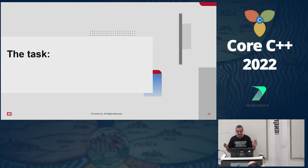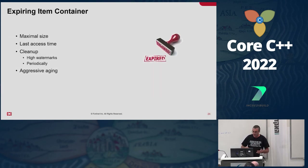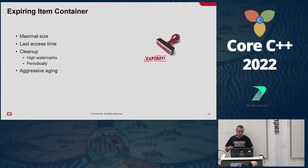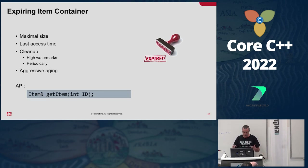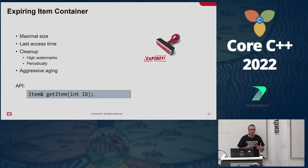The task we're going to implement today is an expiring item container. The container will have a maximal size. Every time we access an item, we'll update the last access time. Either it will reach a high watermark, or periodically we'll run the cleanup. The cleanup will obviously remove the items that have been accessed the longest ago. If we did not clear enough items during cleanup, we'll run aggressive aging — meaning we'll run cleanup again with a lower threshold. The API is going to be very simple: just one call, getItem, which gets the ID and returns the item.